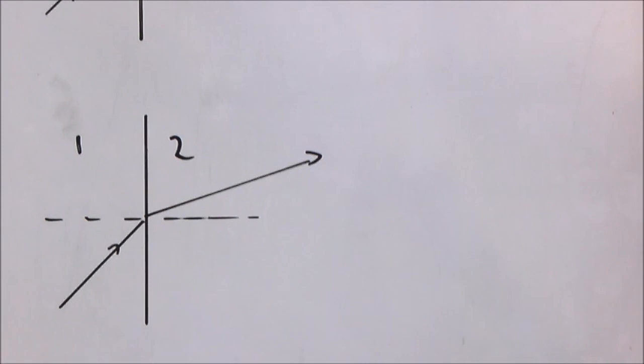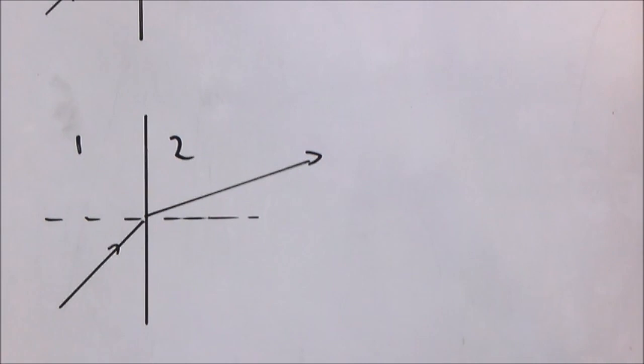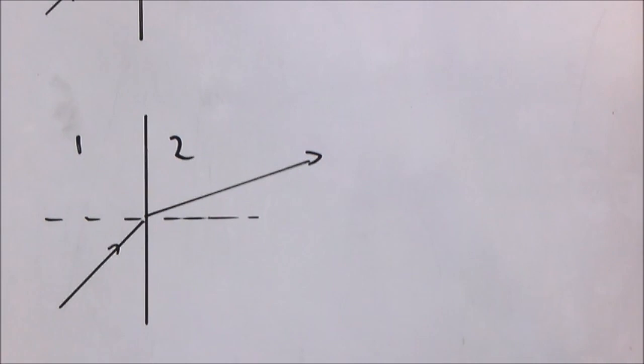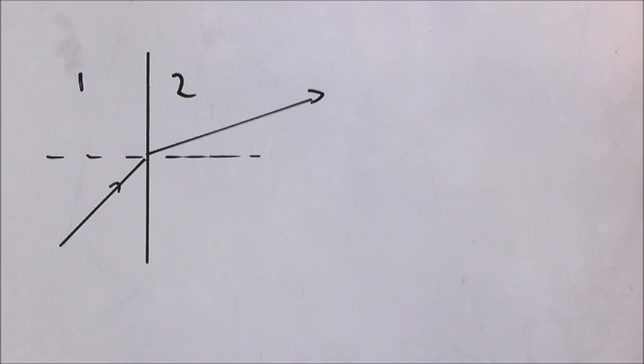Now we're going to do a practical example in applying Snell's law. Here we have a scenario with light traveling from air into water, and the angle of incidence is 30 degrees. They ask us to calculate the angle of refraction for this scenario.